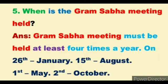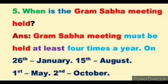Now the fifth question: When is the Gramsabha meeting held? Gramsabha meeting must be held at least four times a year — on 26th January, 15th August, 1st May, and 2nd October. When is the Gramsabha meeting held? Gramsabha meeting must be held at least four times a year, on 26th January, 15th August, 1st May, and 2nd October.